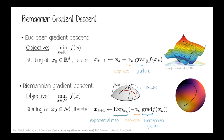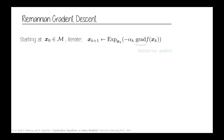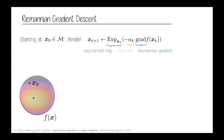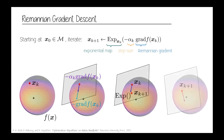That was the most basic Riemannian optimization algorithm. To summarize: we have our iterates, compute the gradient on the tangent space, weight it by the step size, apply the exponential map to move from the tangent space to the manifold, and continue.